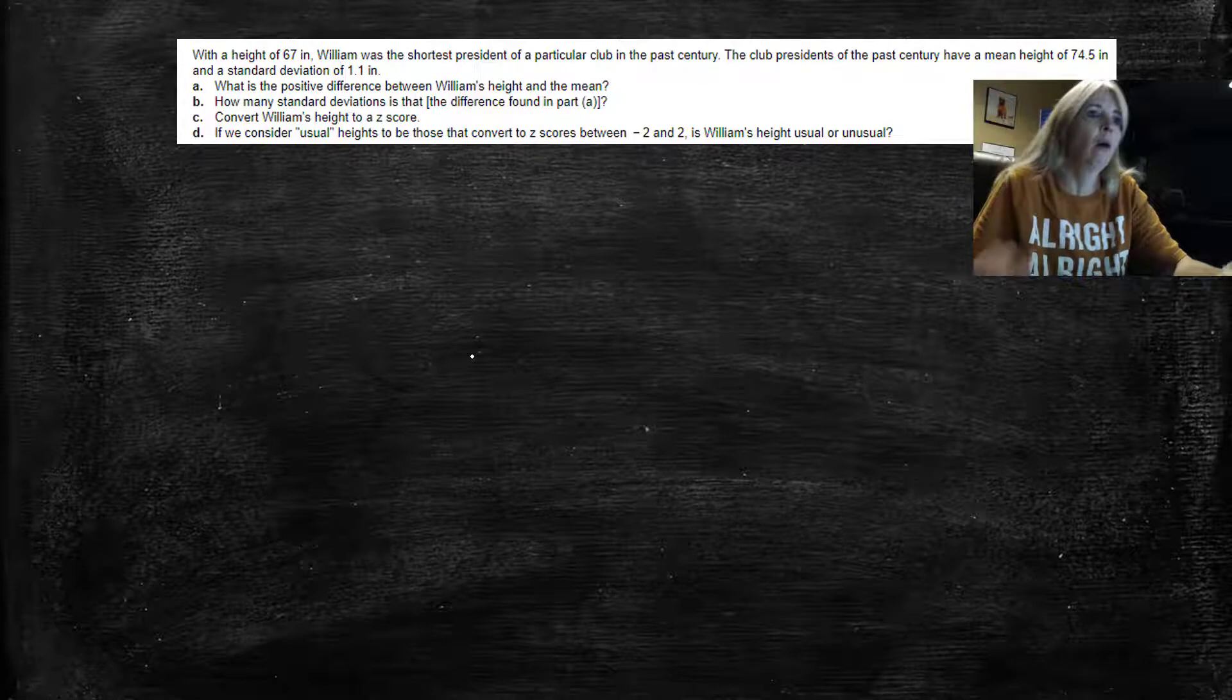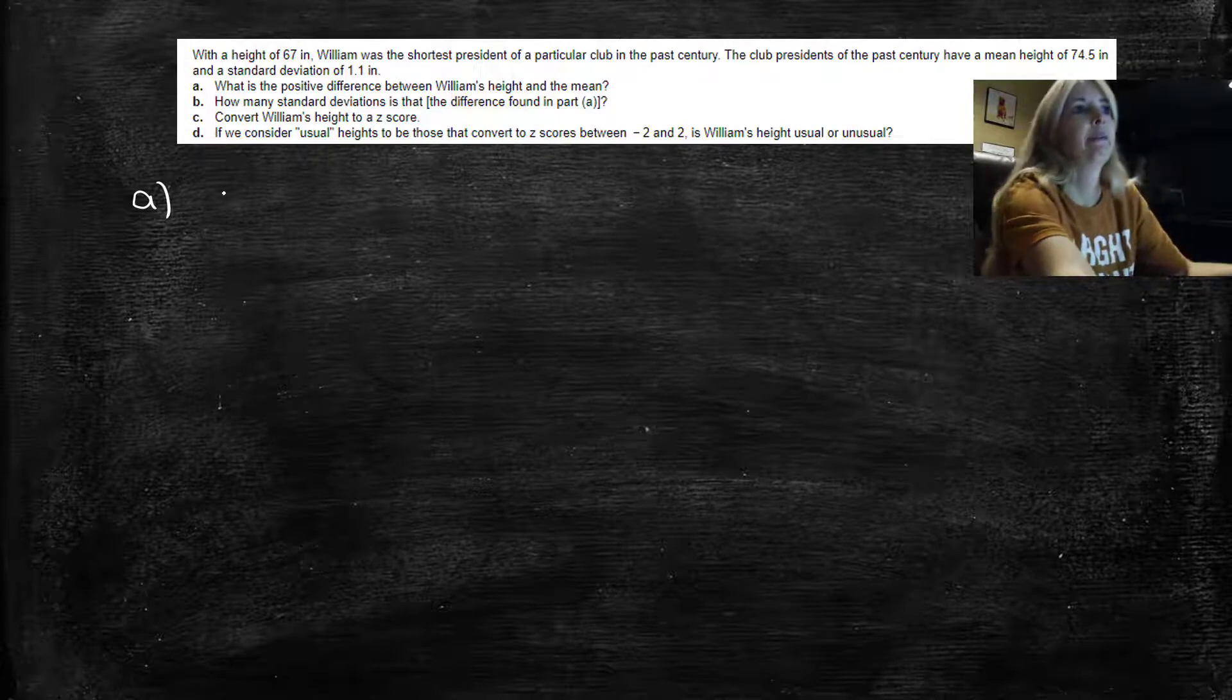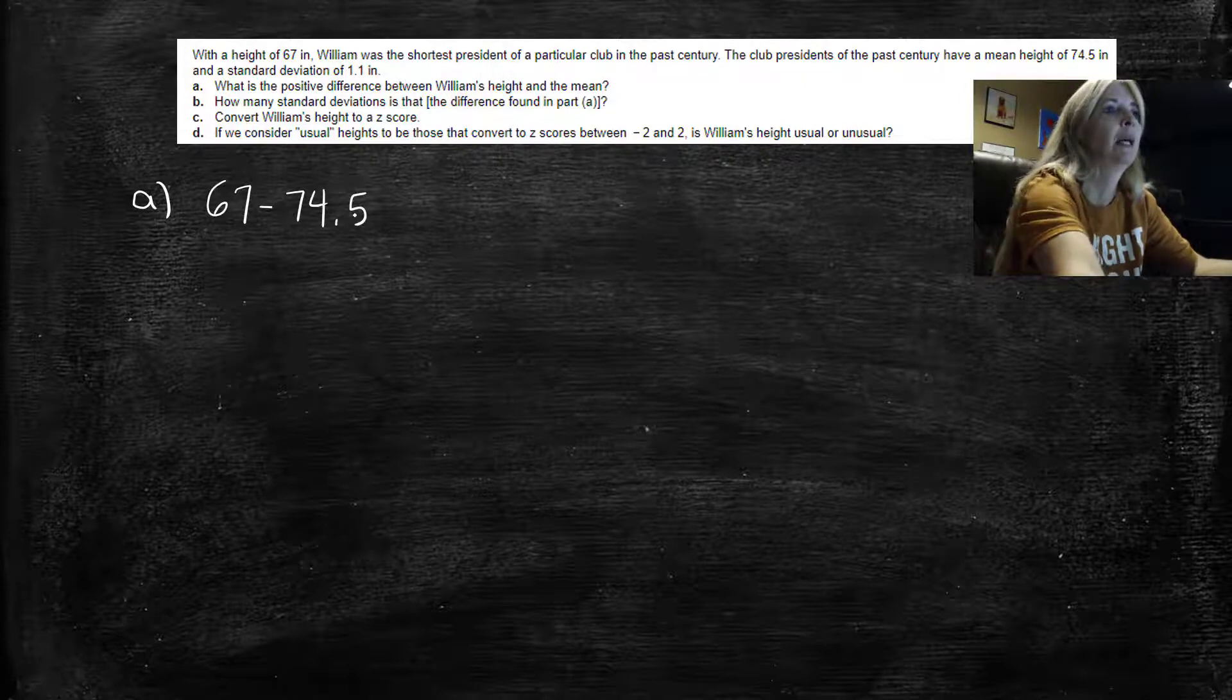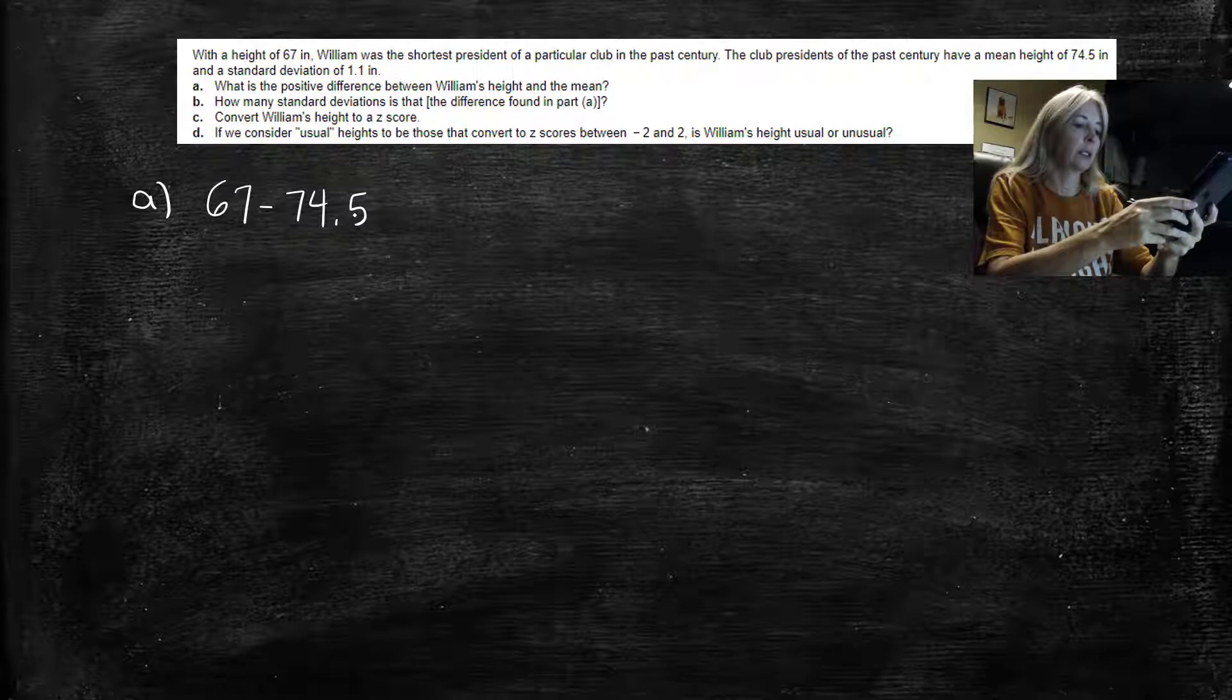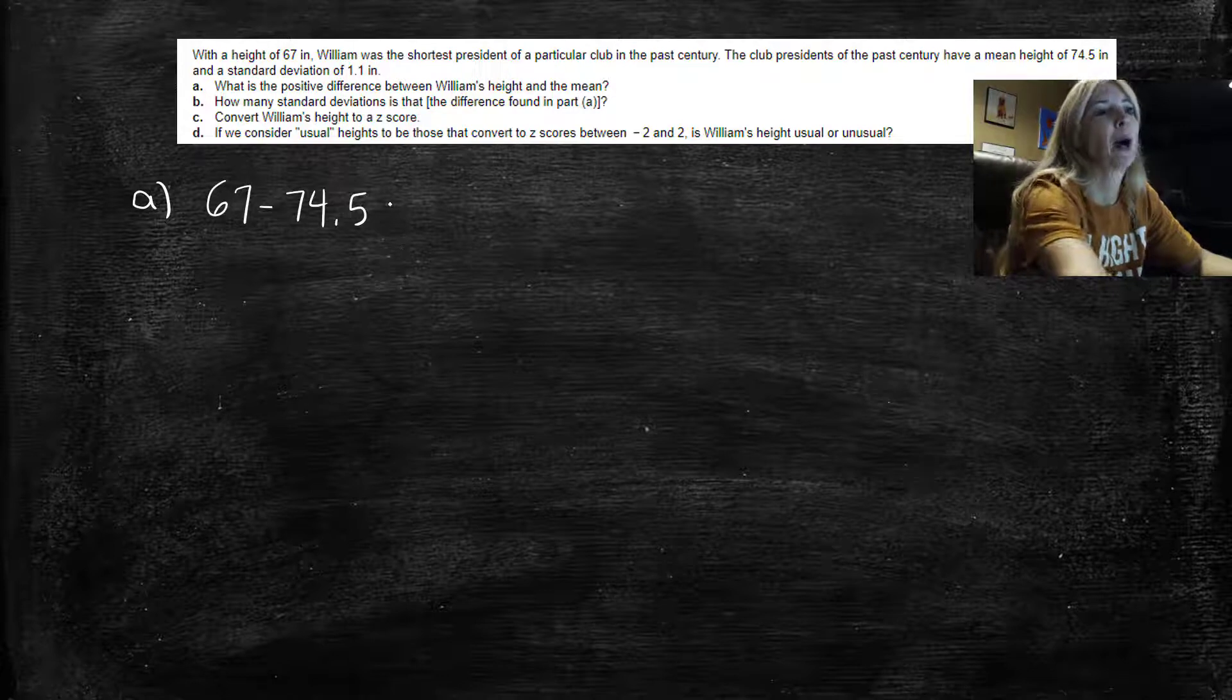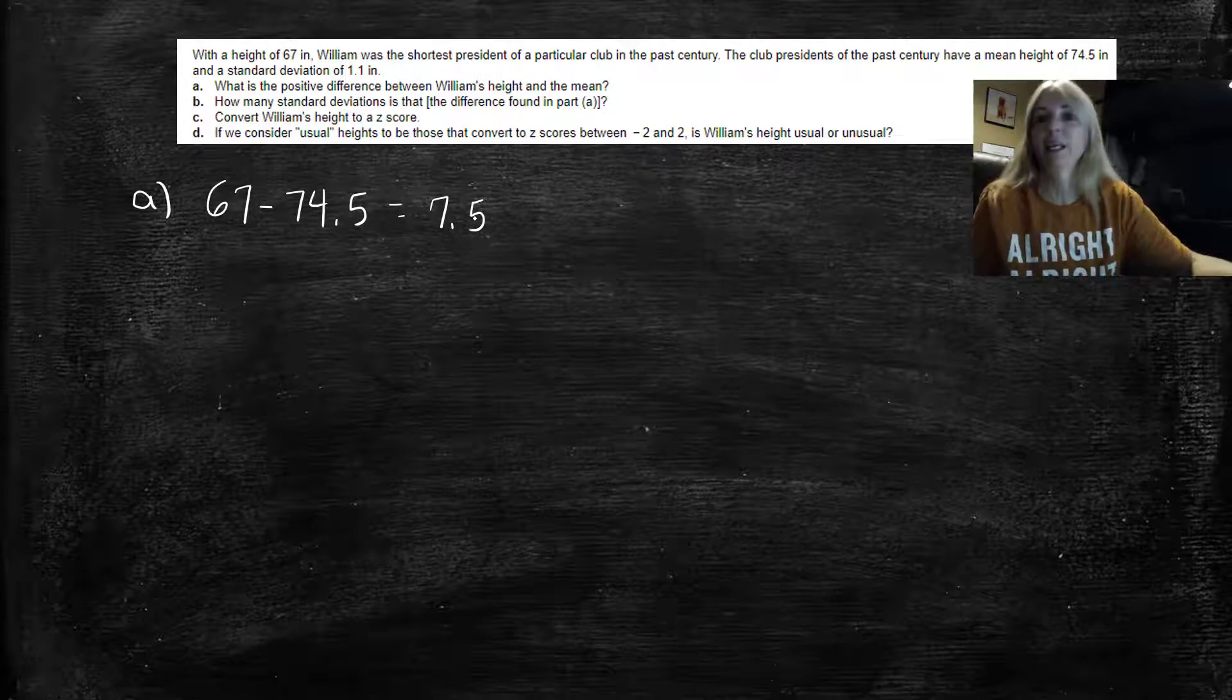So all this is asking in part a is to find 67 minus 74.5. Get your nice little trusty calculators out: 67 minus 74.5, and you get negative 7.5. But it said the positive difference, so in other words, 7.5 inches.